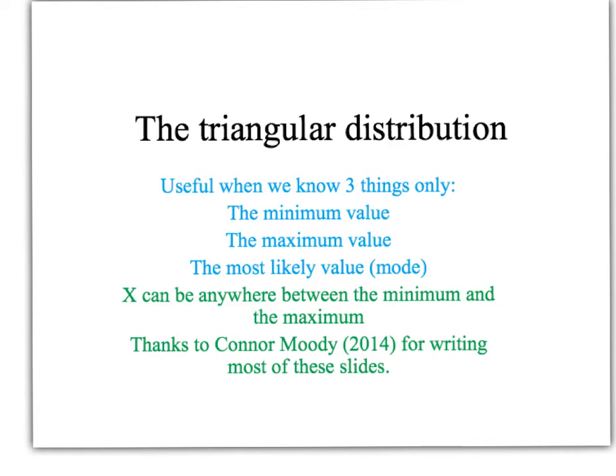Kia ora and welcome to this short video going over the triangular distribution. The triangular distribution is really useful when we just know three things about a situation: if we know the minimum value of a random variable, the maximum, and the most likely value. So if that's all we know, that x can be anywhere between the minimum and the maximum, but we're given the most likely value, then the triangular distribution is often a good starting point, at least until we can go and get some more information.